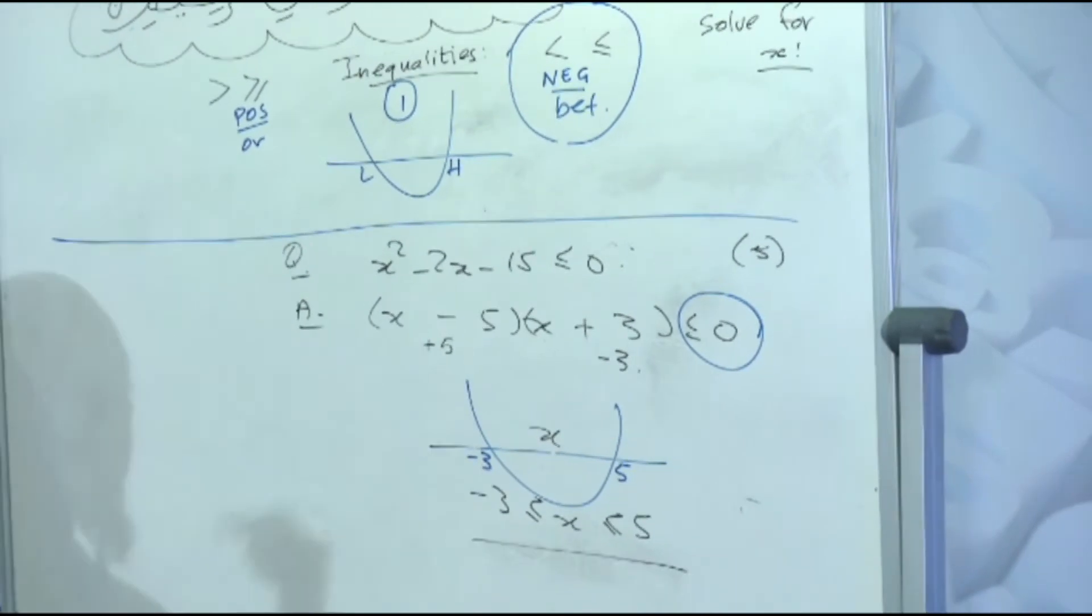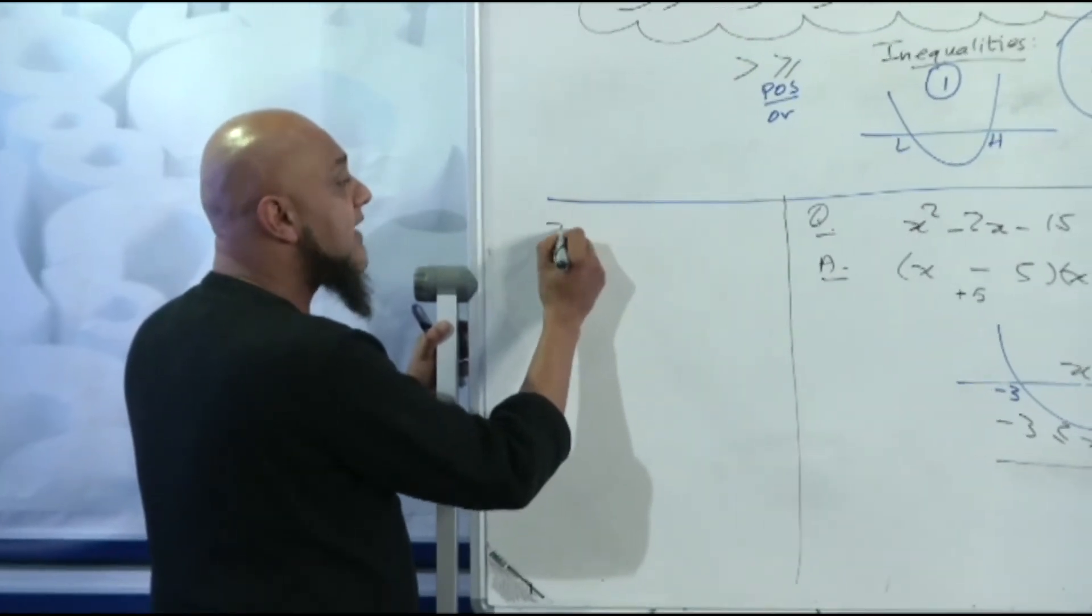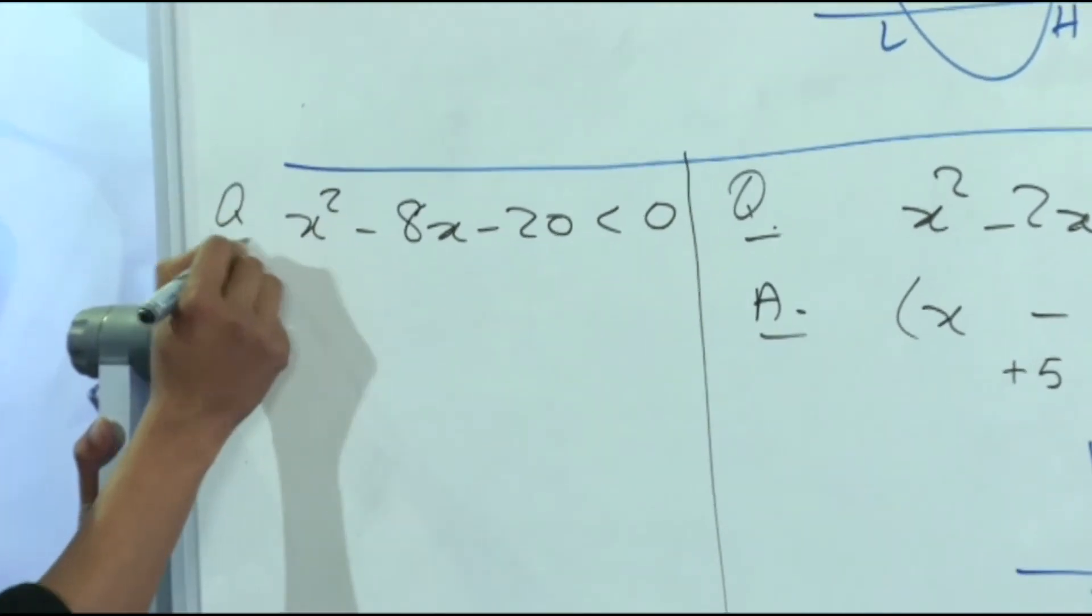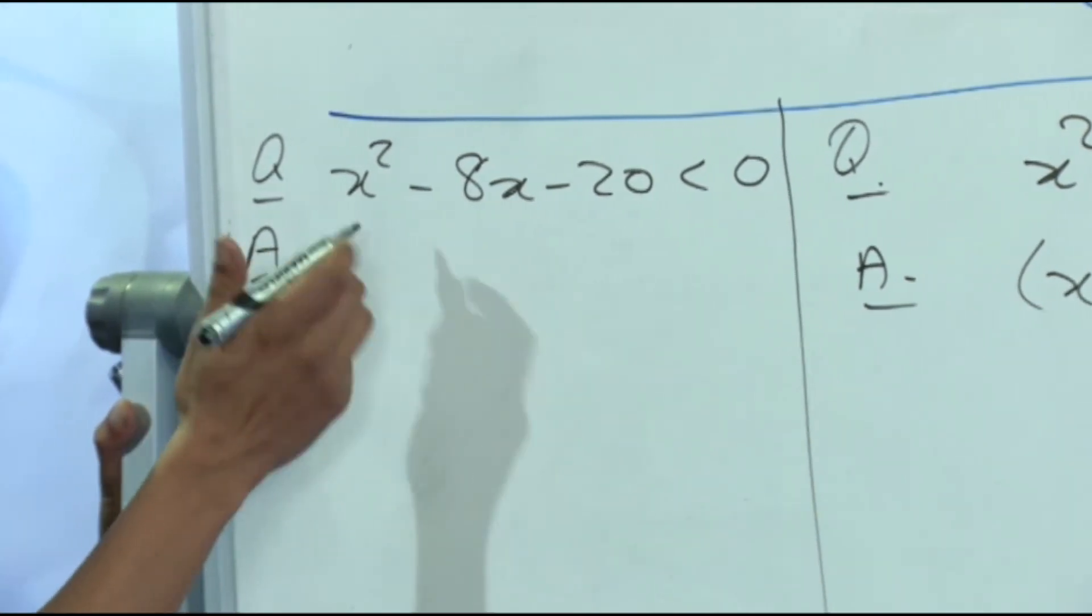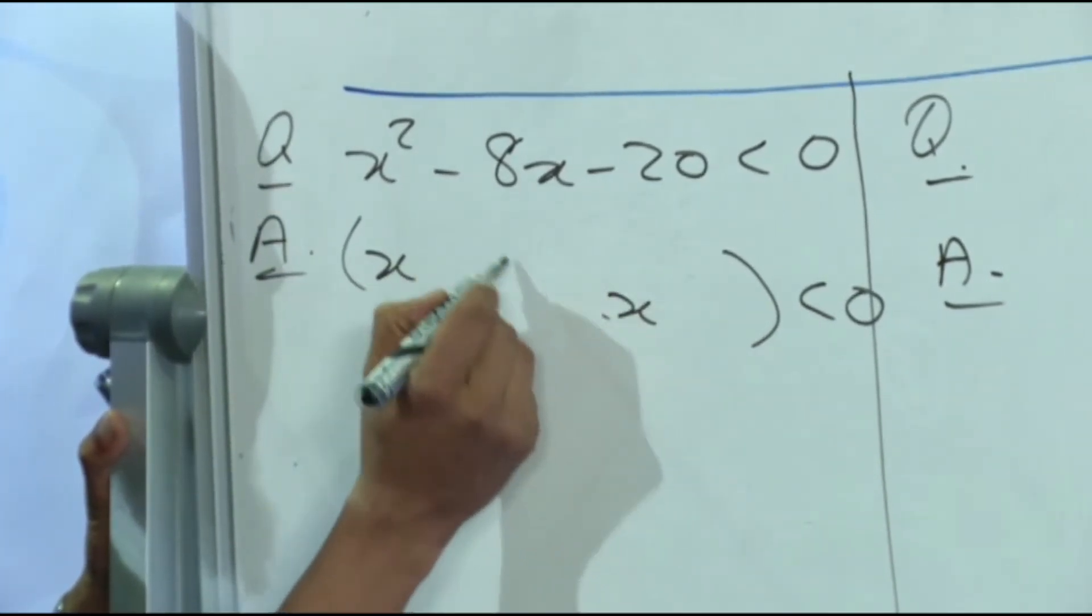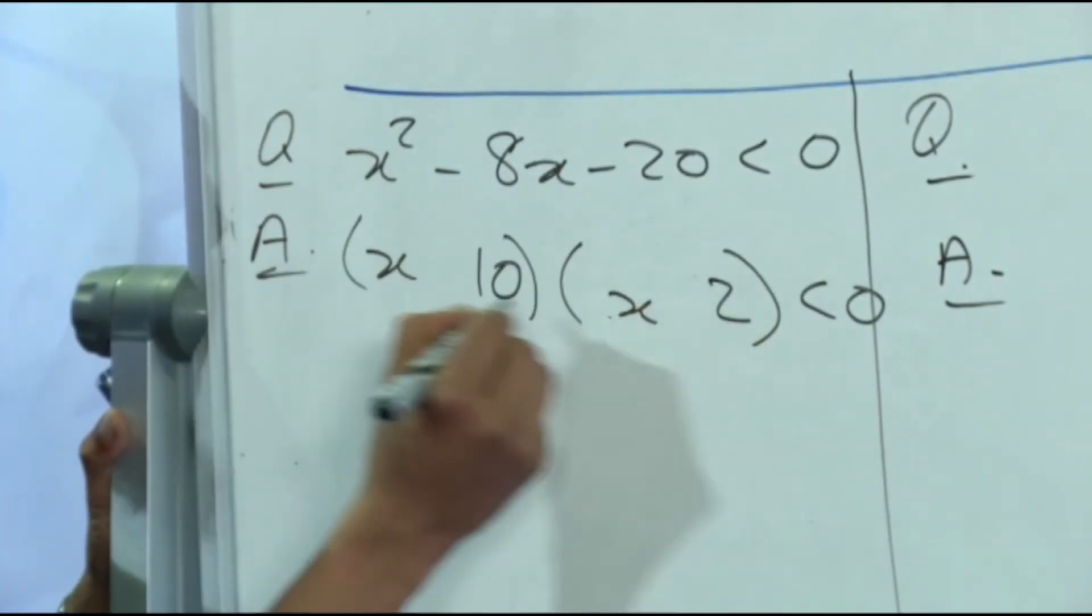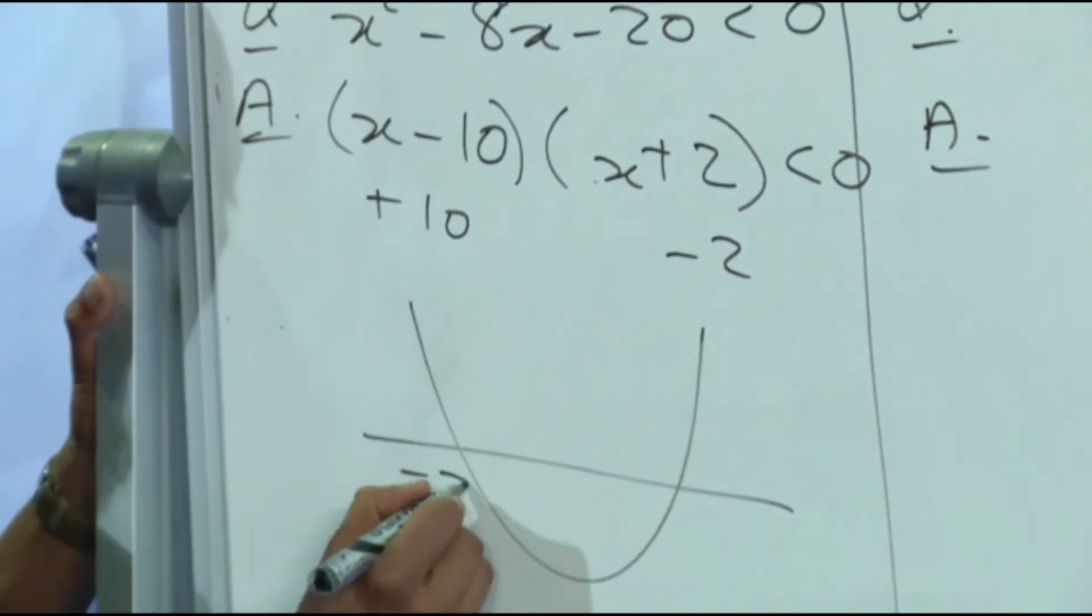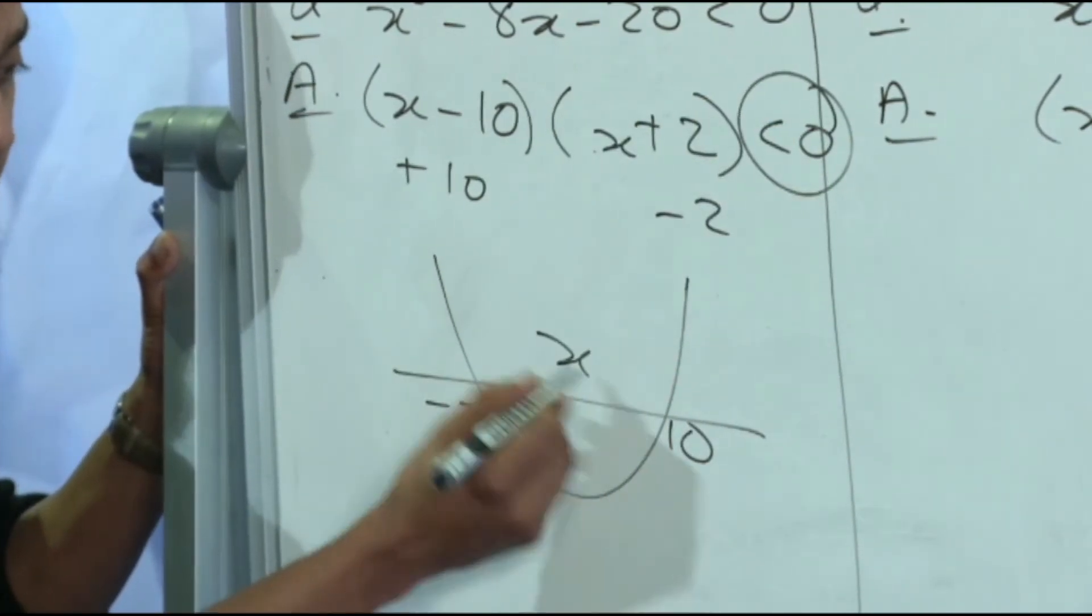Let's do another example. I'm going to move over here to the side. Let's choose example number two. Let's take x squared minus 8x minus 20 less than zero. Question in the exam: solve for x. I'm going to pick up the pace, it's going to be a little faster now. Let's break that up. Less than zero, you're going to have x and x, two brackets. Your factors of 20 to give you 8: 10 and 2, minus plus. What are your two critical values? Plus 10 and negative 2.